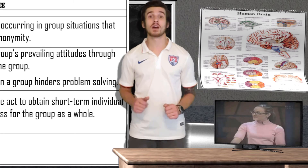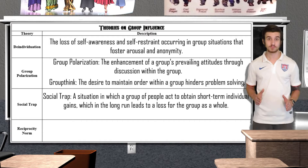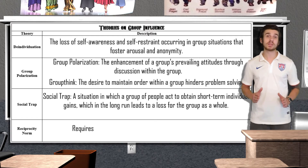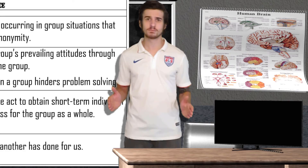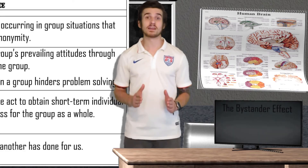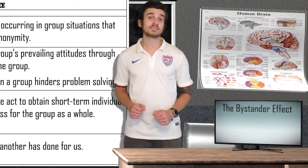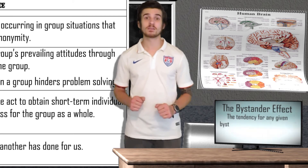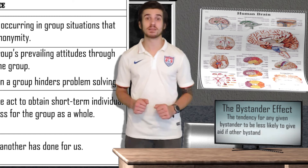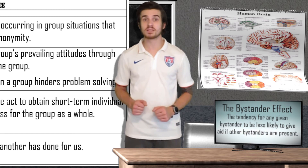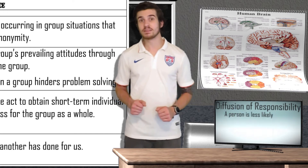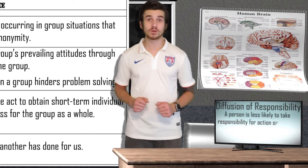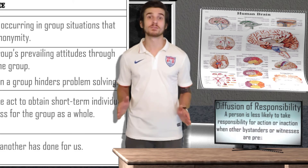The reciprocity norm states that we repay in kind what another has done for us — people will generally help each other out by returning favors. Our last topic of social influence is the bystander effect — the tendency for any given bystander to be less likely to give aid if other bystanders are present. This phenomenon can be explained by the diffusion of responsibility, which states that a person is less likely to take responsibility for action or inaction when other bystanders or witnesses are present.